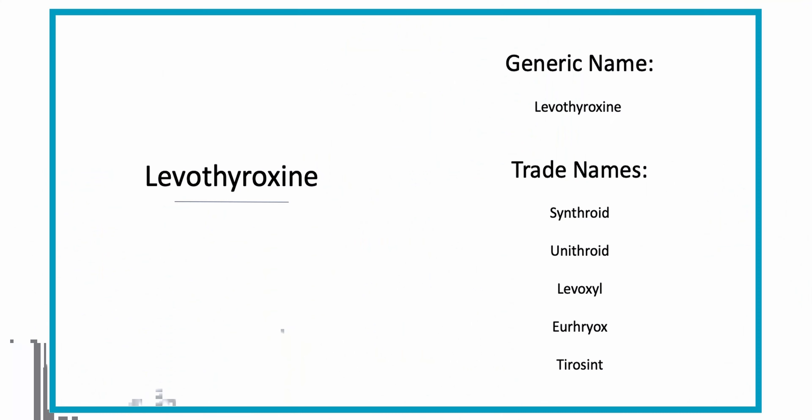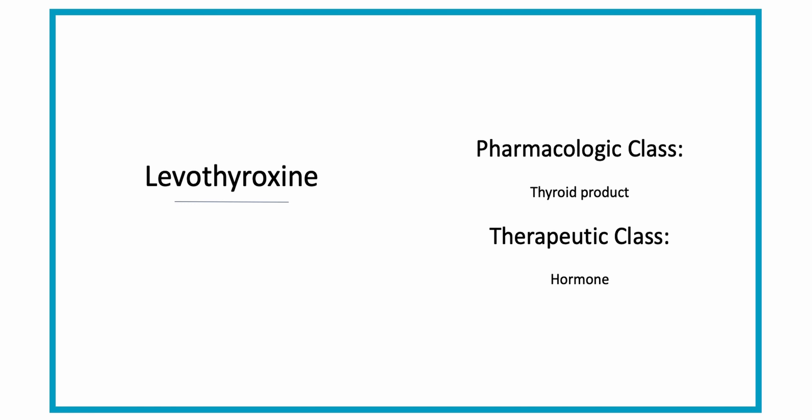The generic name is levothyroxine and the trade names are Synthroid, Unithroid, Livoxil, Urthrox, and Tyrosine. The pharmacologic class of levothyroxine is a thyroid product and the therapeutic class is a hormone.